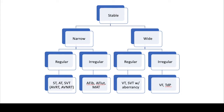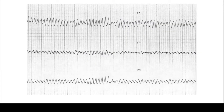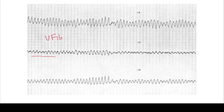Here we have an example of V-fib, and we see this kind of irregular wide complex tachycardia. There are no distinct QRS complex morphologies. It's much different than the polymorphic VT that you could see.